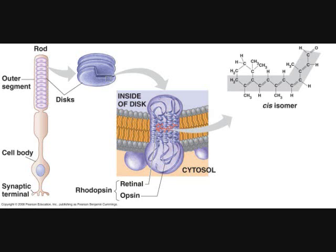11-cis-retinal. Retinal can exist in either one of two stable states. These stereoisomers are called 11-cis-retinal and 11-trans-retinal. When it is bound to inactive rhodopsin, retinal exists in the cis — the 11-cis — configuration.